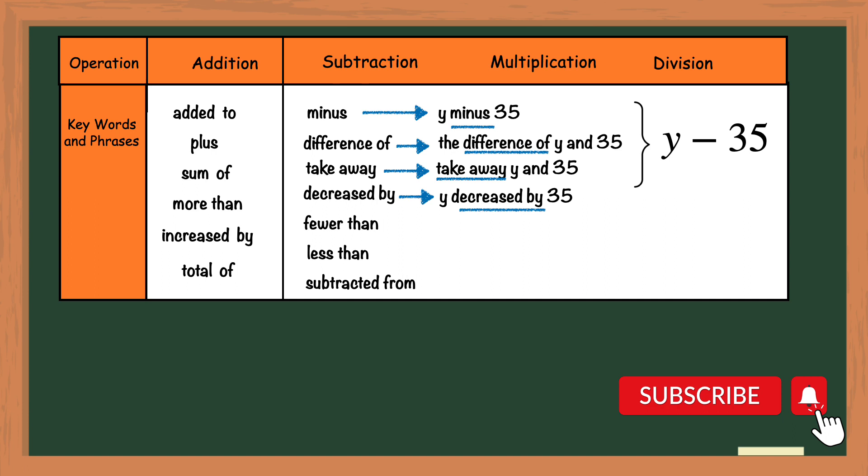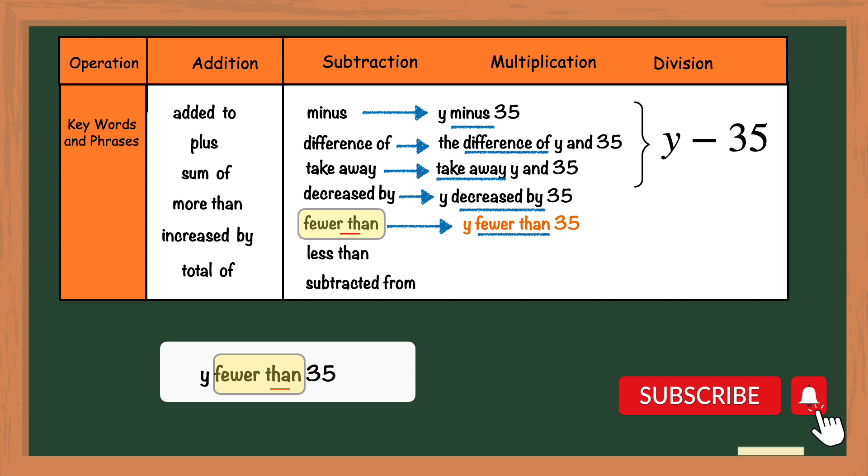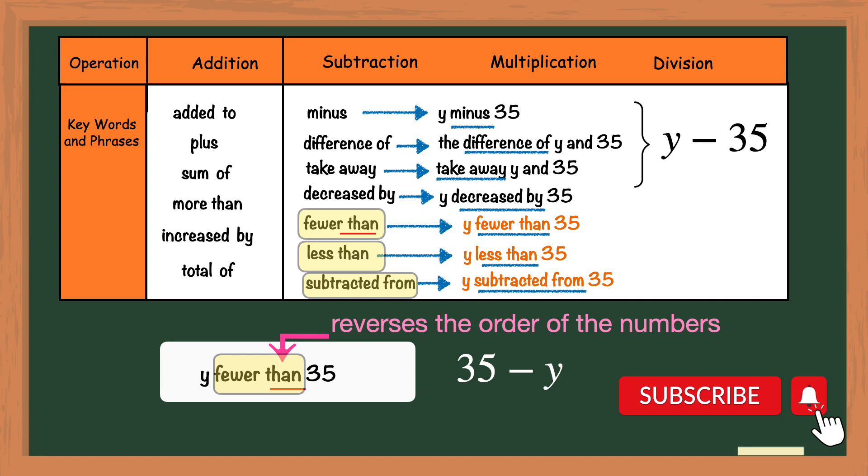Now these last three phrases will result in a different algebraic expression other than y minus 35. Let's look at fewer than first. Do you see we have the word than in this phrase? Remember the word than reverses the order of the numbers so the algebraic expression will be 35 minus y not y minus 35. These next two phrases of less than and subtracted from will also be written as 35 minus y. The words than and from reverse the order of the numbers or variables in the written algebraic expression.